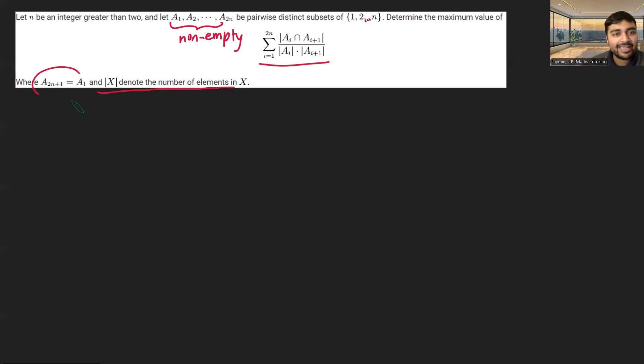And here, just for clarification, a2n plus 1 just means a1. So up here, when i is 2n, we have an a2n plus 1 there, which just means a1.